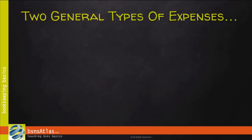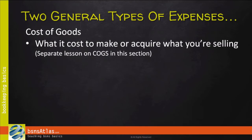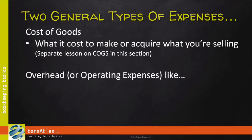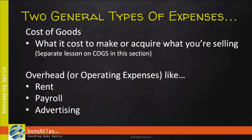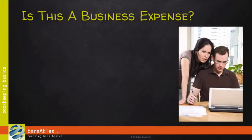Basically, expenses fall into two categories. Some expenses are just the cost of producing or acquiring a product that we're going to sell, and those are called cost of goods sold — we're going to talk about that later in a whole section by itself. The other type of expenses are what we call overhead, such as rent, payroll, and advertising, but it's not for actually building, making, or acquiring whatever it is that you're selling.